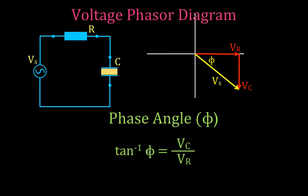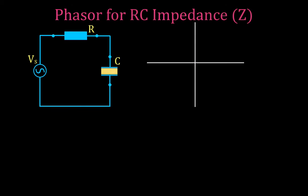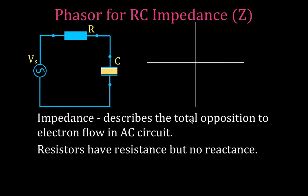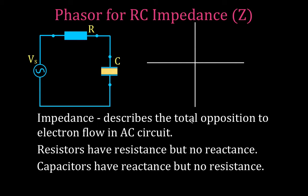That's the voltage phasor diagram — giving us the source voltage and the phase angle. Now let's talk about impedance. Impedance describes the total opposition to electron flow in an AC circuit. It's called total opposition because resistors have resistance but no reactance, while capacitors have reactance but no resistance. For an RC circuit we add up all the resistances and reactances to get the impedance, represented by the symbol Z.